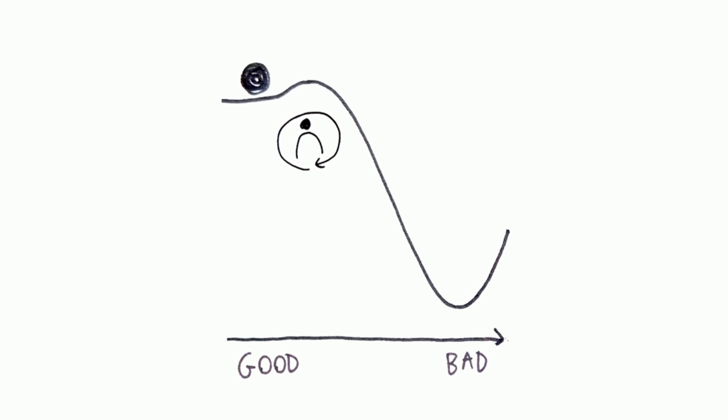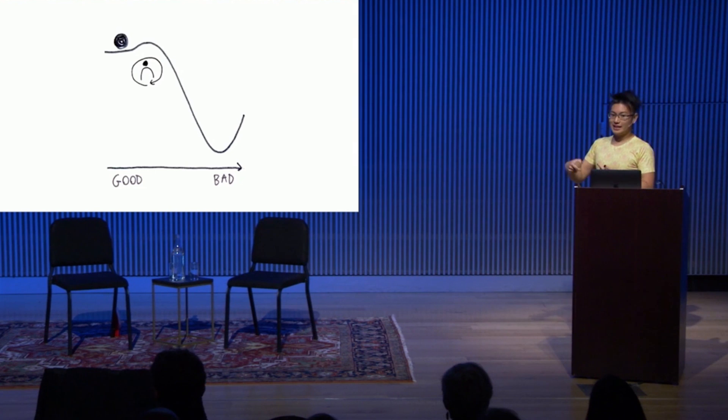One reinforcing loop in the power station example is power station fails, it cascades onto the next ones. Or a bank fails and that cascades onto the next banks. It keeps the ball rolling.